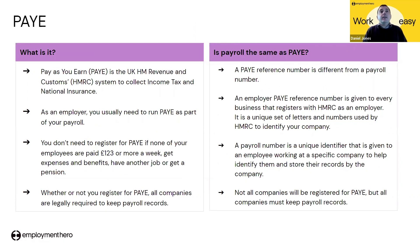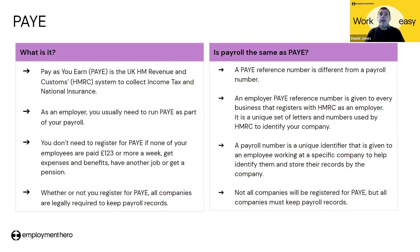Pay As You Earn — PAYE — is the HMRC system used to collect income tax and national insurance from wages. An employer usually needs to run PAYE as part of their payroll. You do not need to register for PAYE if none of your employees are paid £123 or more per week, have no expenses and benefits, and have no other job or pension. However, whether or not you need to register for PAYE, it's really important that you keep accurate records of all payments made to employees.